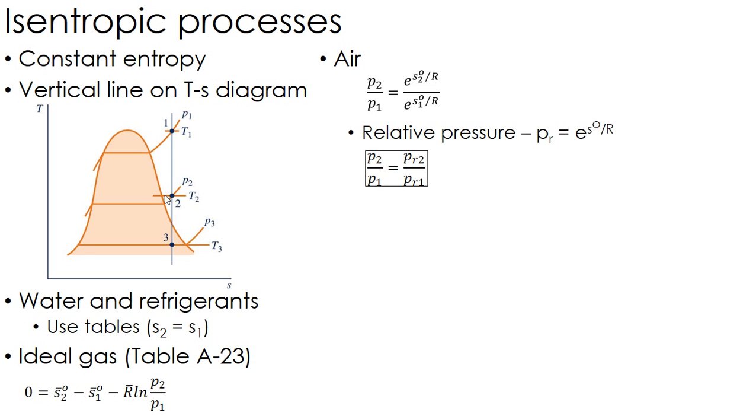These columns are only good for isentropic processes where delta S equals zero. For those processes, if I know the first state (pressure and temperature), I can take the temperature and look up PR for that first state.